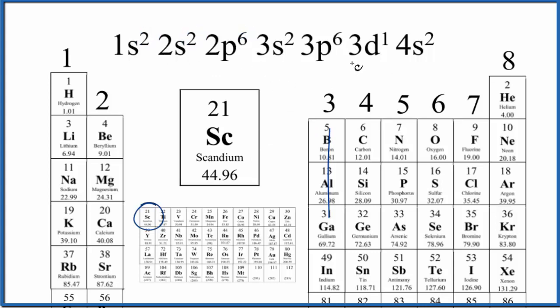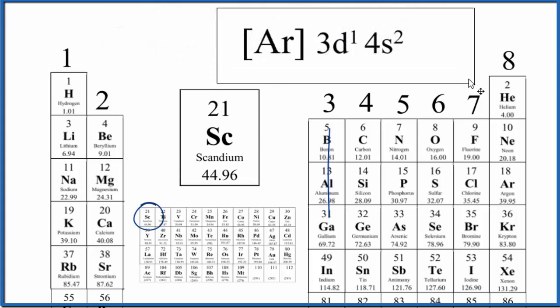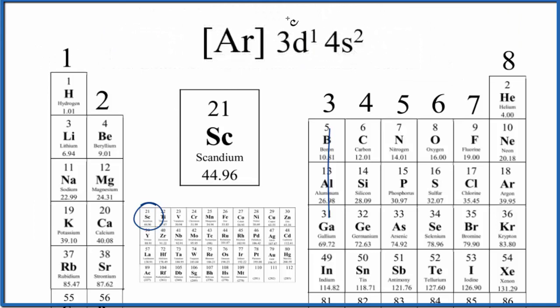What might be helpful is if we take the electron configuration for argon, that's the noble gas before scandium. So it has 18 electrons. We can replace that and have a condensed notation like this. So this is the condensed notation for scandium.